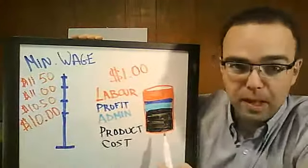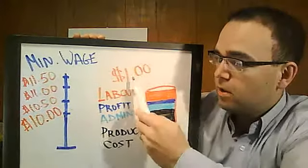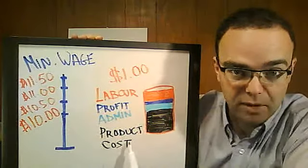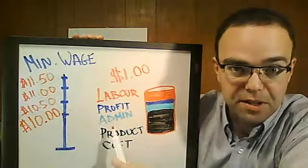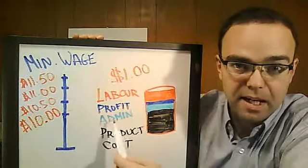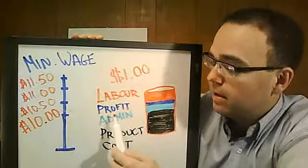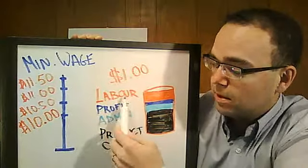Right now, when you go into a corner store and buy a soft drink for, say, $1, that price includes the cost the business has to pay for that good, admin costs such as electricity, advertising, those types of expenses. Obviously, the business is there to make a profit. And then, of course, it also has to include labor costs.